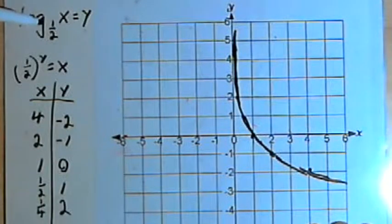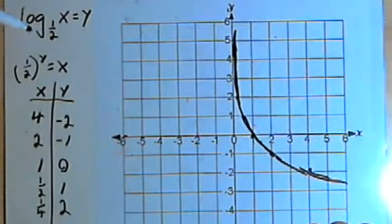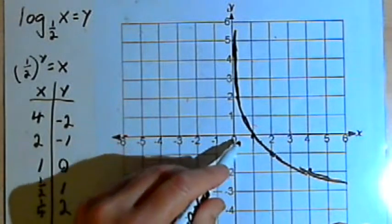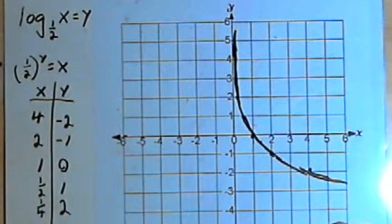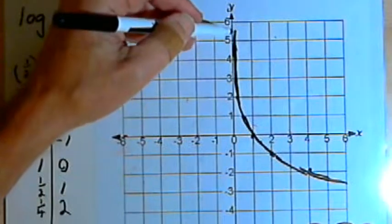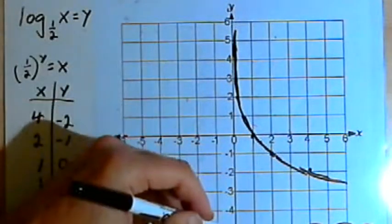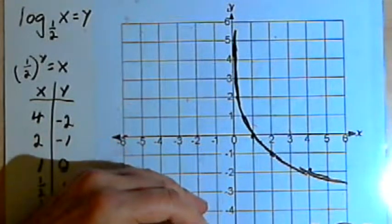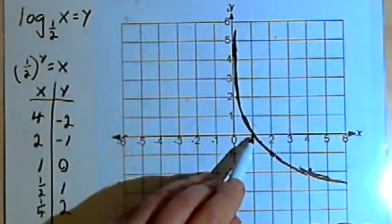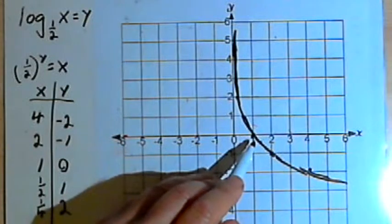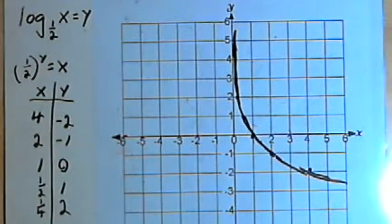In general, for logarithmic functions without transformations: the domain is all positive numbers from 0 to infinity, the range is all real numbers, there's a vertical asymptote along the y-axis at x equals 0, and there's an x-intercept at (1, 0). That's about it — take care, see you next time.